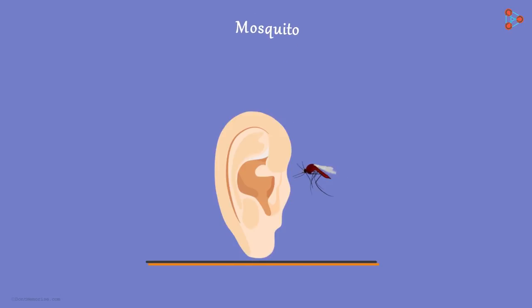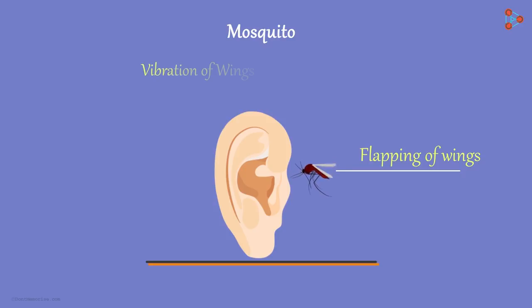Do you hear the buzzing when a mosquito is close to your ears? Ever wondered how that sound is made? The sound is because of flapping of wings by a mosquito. Yes, the wings of mosquito are vibrating and it's this vibration that produces the buzz we hear.